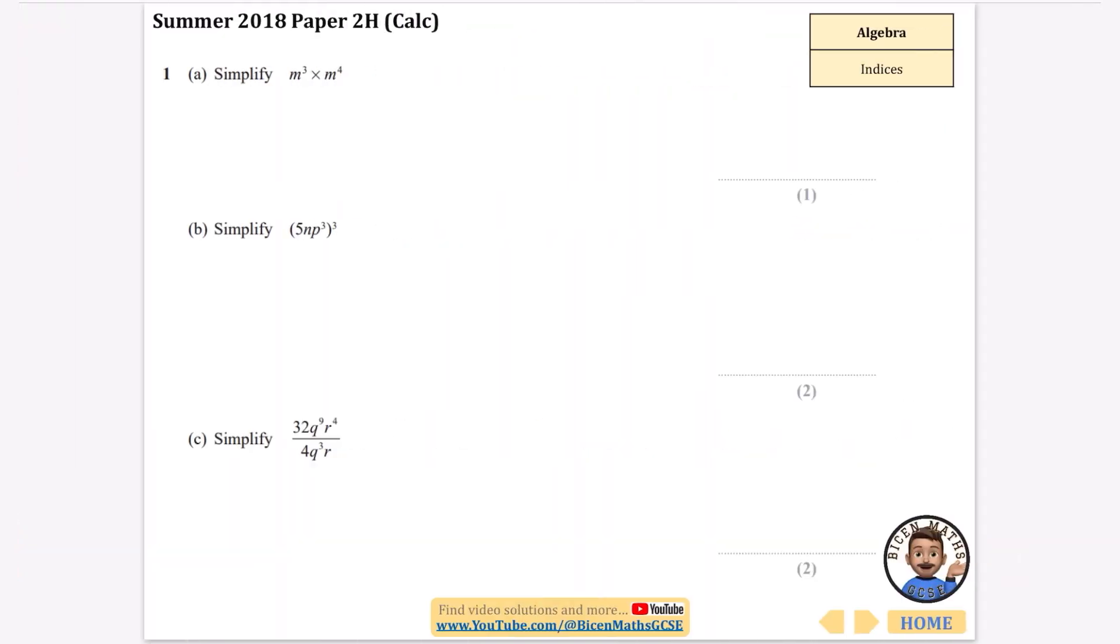This is from a calculator paper. This one we want to simplify m cubed times m to the power of 4. Well, we just add the powers, so we get m to the power of 7.